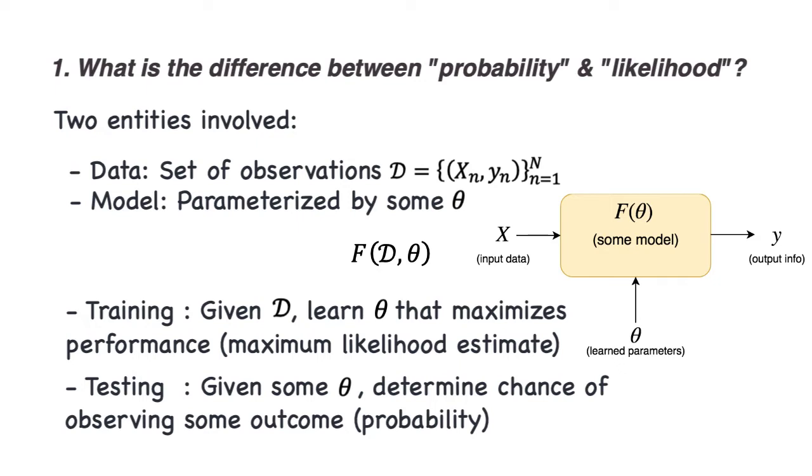It's during this testing phase that, given some theta, we determine the chance of observing this outcome. That is probability. So the difference: Probability - during the testing phase, given a theta, we determine the probability of observing the outcome. And likelihood - during the training phase, given some outcome, we determine the theta that maximizes the probability that such an outcome occurred. Although they are similar in math notation, they have very different meanings.